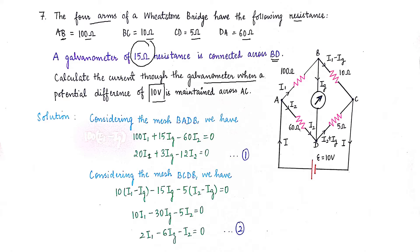We need to calculate the current through the galvanometer when a potential difference of 10 V is maintained across A and C. The potential is applied across A and C, the arms have their resistances, and the galvanometer is on the diagonal with 15 ohms. This question will be solved using Kirchhoff's second rule — Kirchhoff's loop rule.